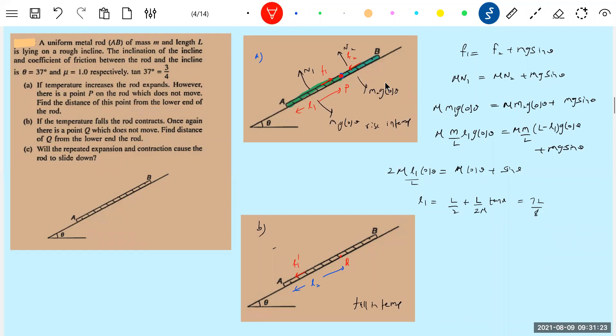F1' you call it. Here, the friction will act due to contraction. So let this be L2. Okay, now again, this will be N1', N2', M2' G cos theta.